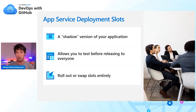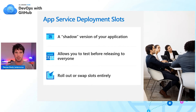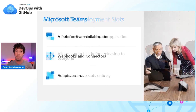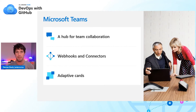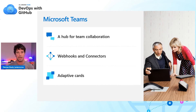Once you're ready, you can roll it out gradually or just swap the production and staging slot, making it really easy and quick to deploy to a staging site and then production. We're also going to use Microsoft Teams as our hub for team collaboration. It has a lot of integration points — web hooks, connectors, and adaptive cards — so it's not just text; you can do these nice little cards. We'll use that as our chat location.